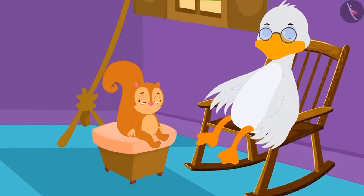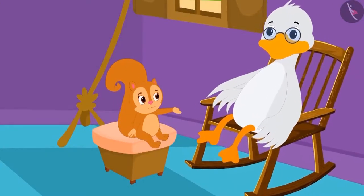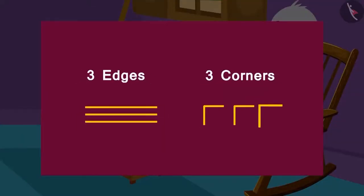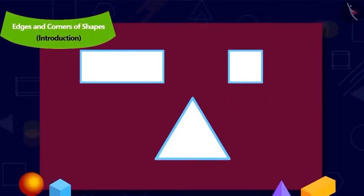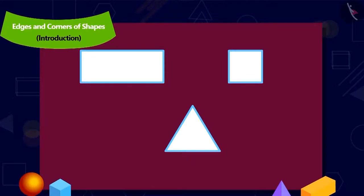Then Chanda told Uncle that she is looking for an object that has three edges and three corners. Uncle made these three shapes on paper. Children, do you recognize these shapes? Yes! This is a rectangle. This is a square. And this is a triangle.